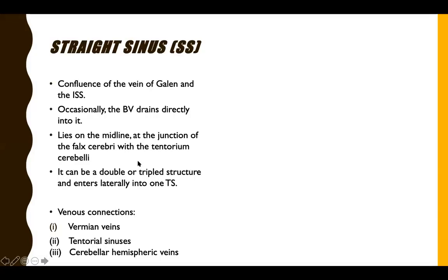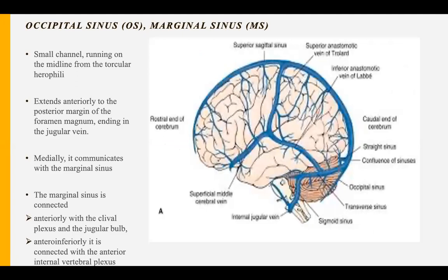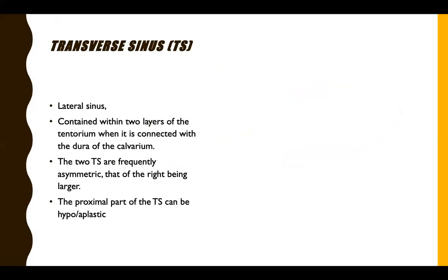The straight sinus is formed by the confluence of the inferior sagittal sinus and the vein of Galen. Occasionally, the basal vein can also open directly into it. It lies in the midline at the junction of the falx cerebri with the tentorium cerebelli, and can be double or triple. Its venous connections include posterior veins such as vermian veins, tentorial sinuses, cerebellar hemispheric veins, occipital and marginal sinuses. The occipital sinus is a small channel from the torcula that passes to the posterior margin of the foramen magnum. The marginal sinus overlies the foramen magnum and connects with the clival and vertebral venous plexuses.